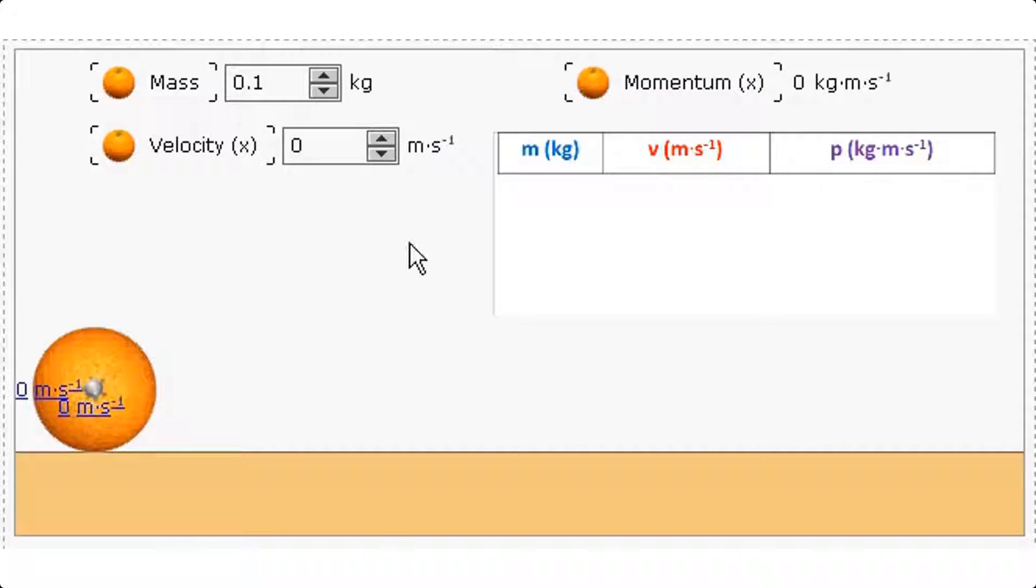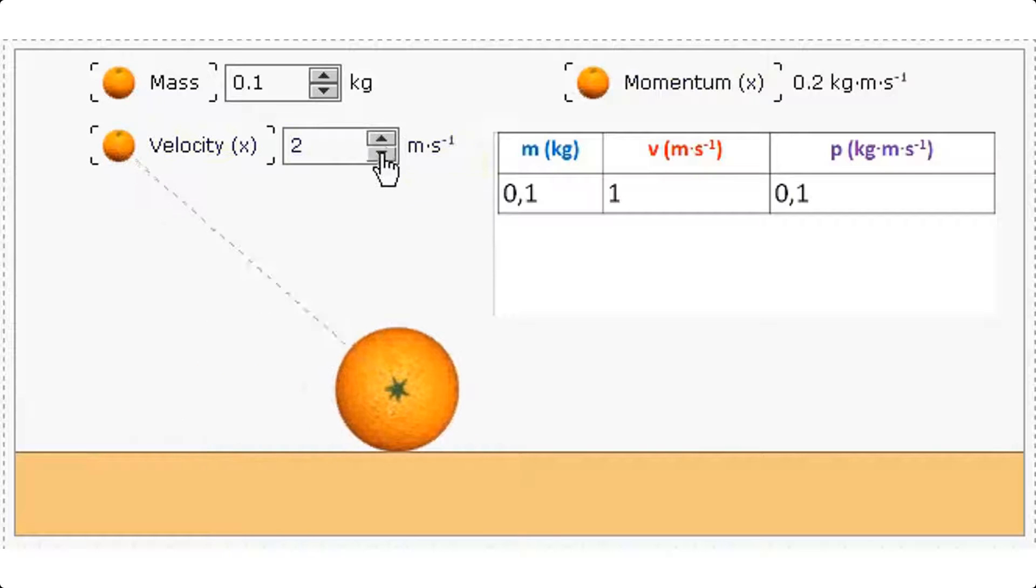Here we have an orange of mass 0.1 kilograms. At the moment its velocity is 0 meters per second and its momentum 0 kilogram meter per second. But what will happen if I raise its velocity to 1 meter per second? Watch the reading for momentum while I do this. At 1 meter per second the momentum is 0.1 kilogram meter per second for the 0.1 kilogram object.